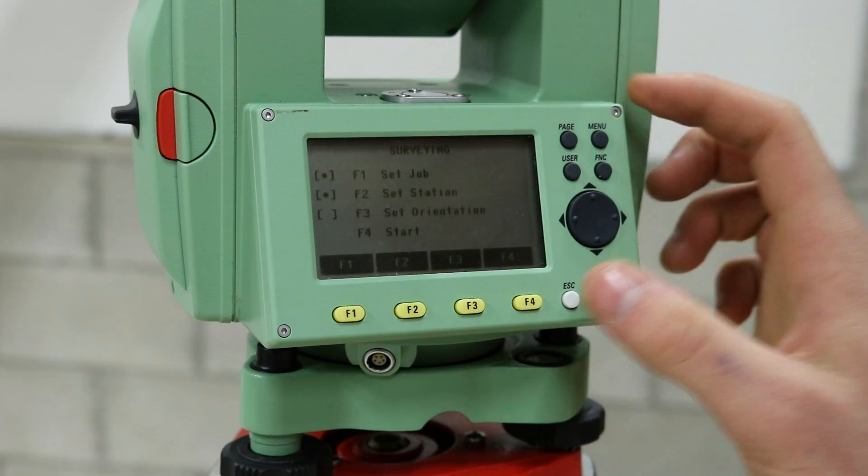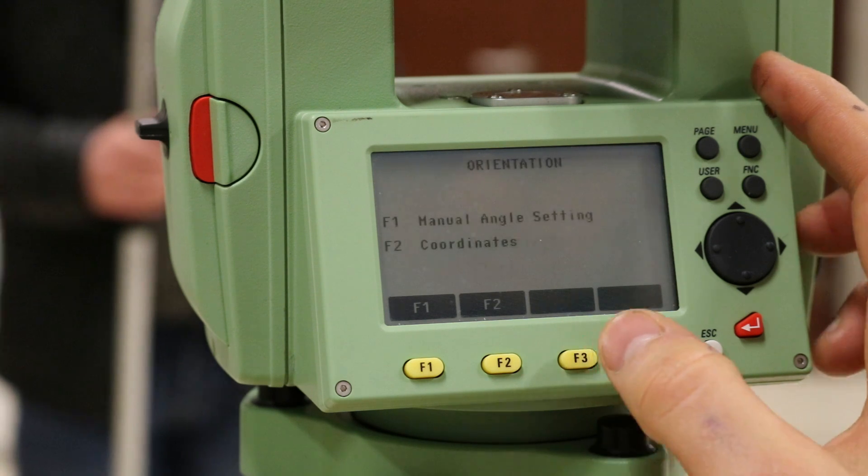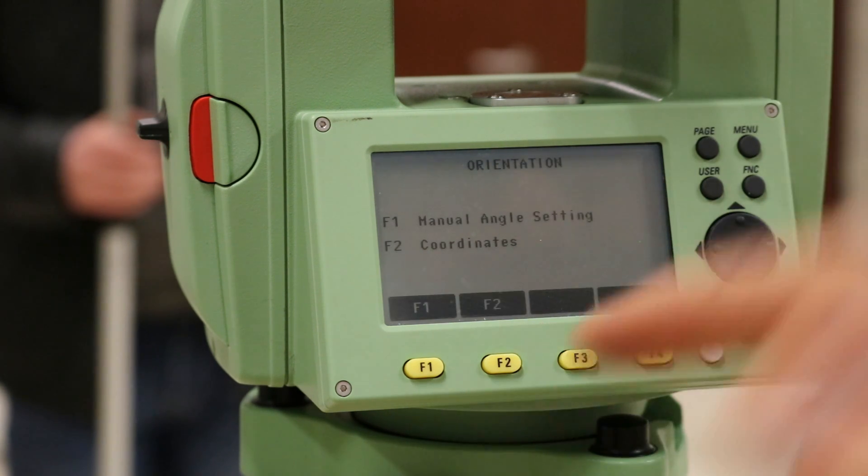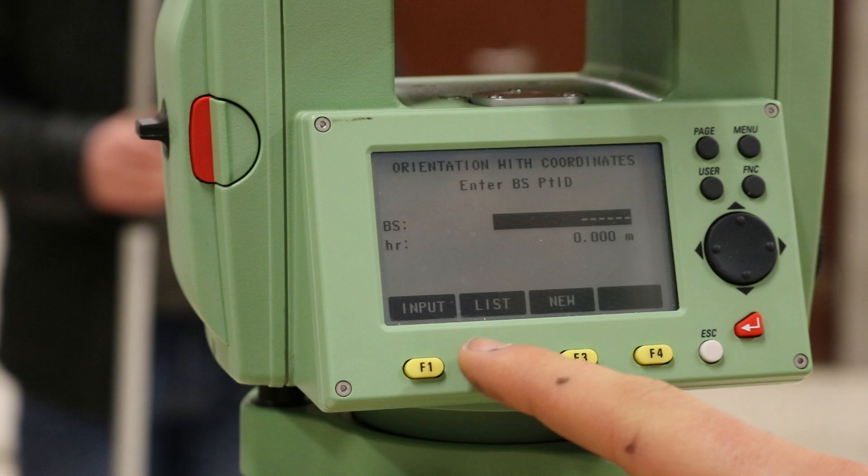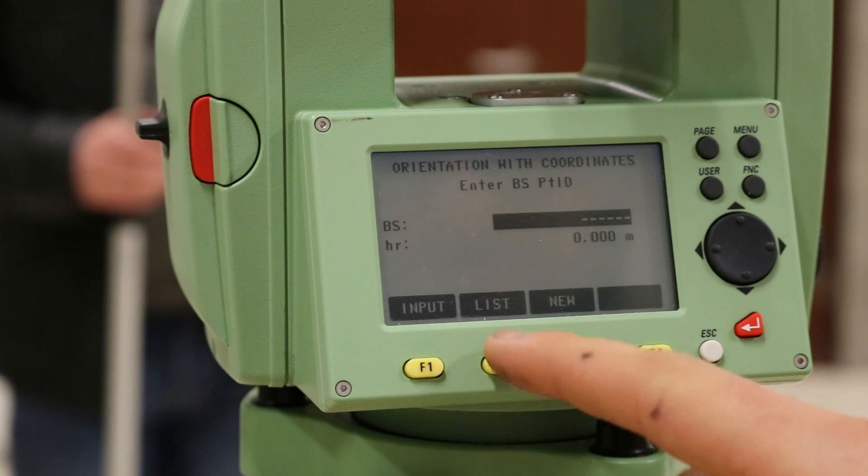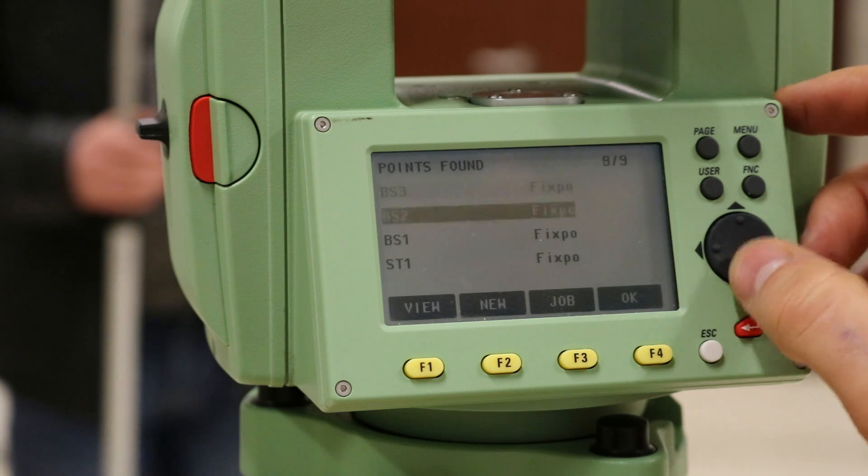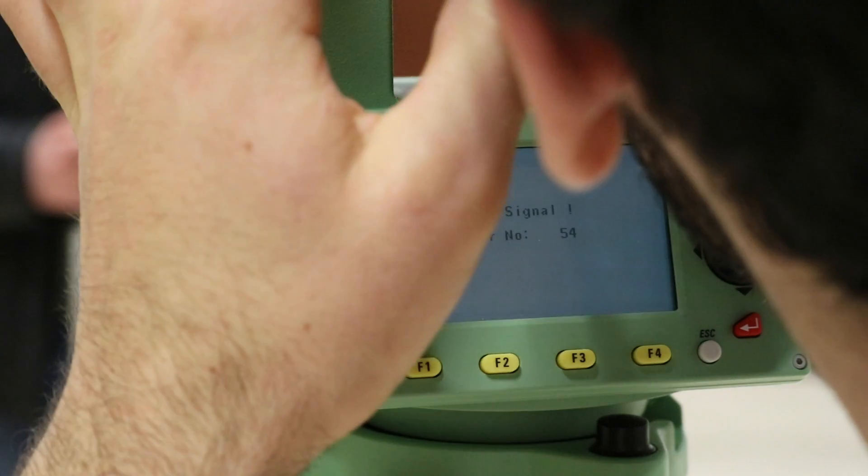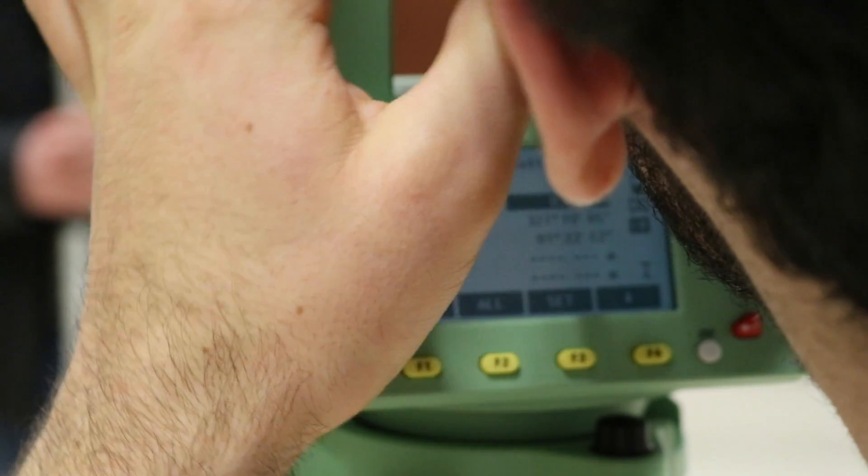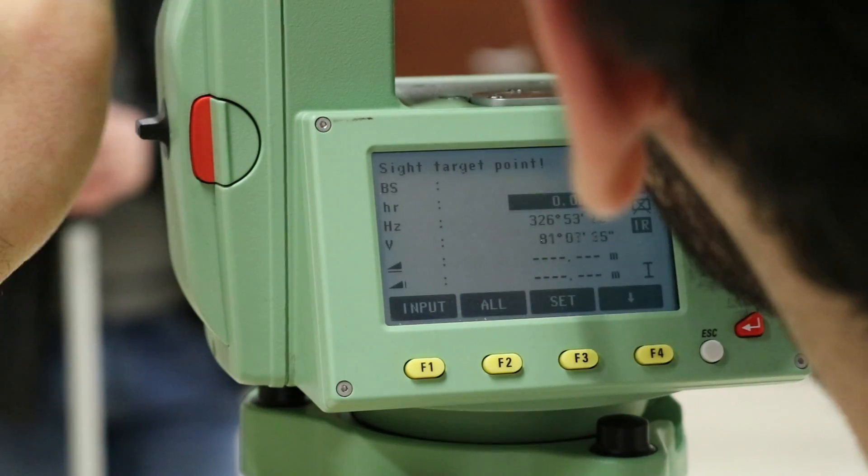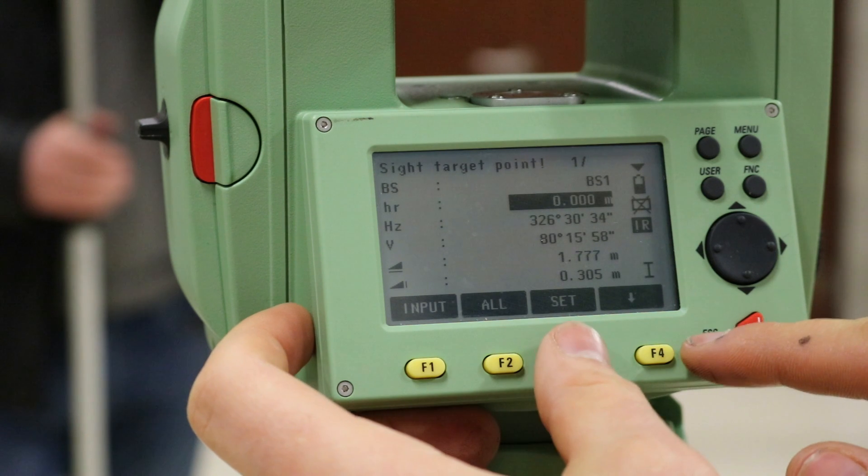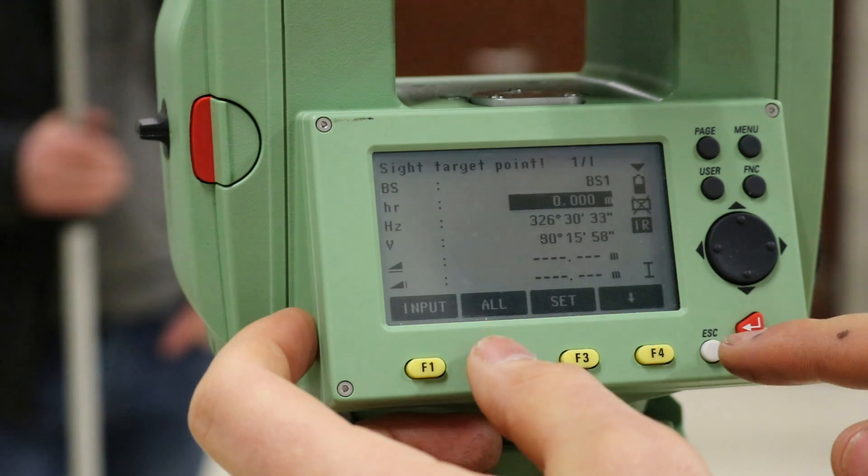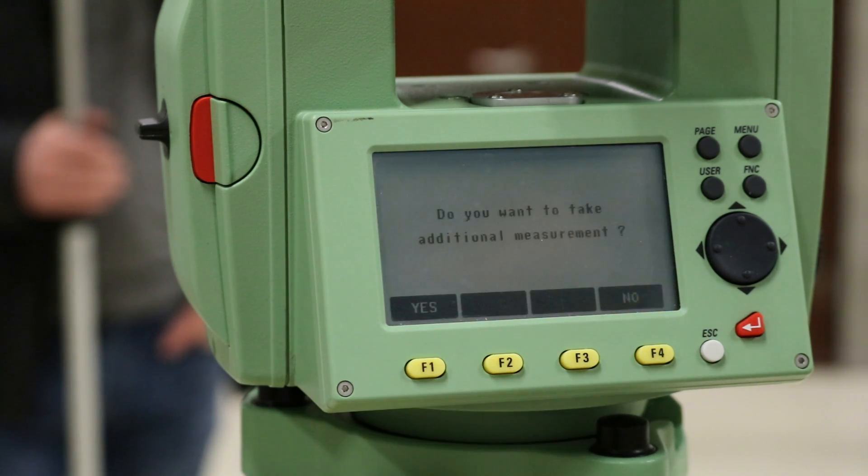Next, set the orientation of the station by pressing the set orientation function. Press the coordinates function to backsight to the known coordinate. Choose the point you wish to backsight to using the find function and press OK. Like for the free stationing, look through the eyepiece of the total station and aim the crosshairs at the prism that is placed over the unknown point. Shoot at the target by pressing the all option and record the data.